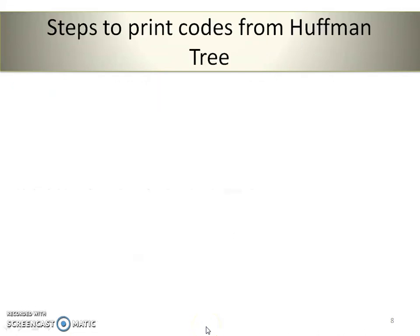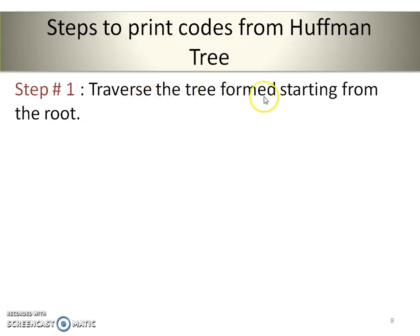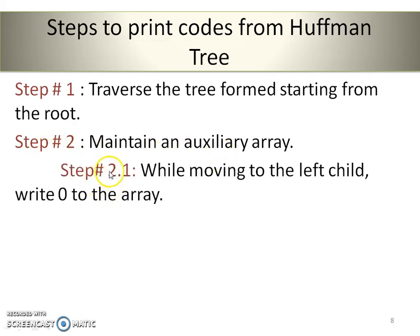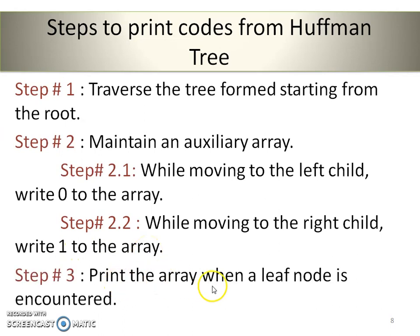After construction of the Huffman tree, we need to find out the Huffman codes. Step 1: Traverse the Huffman tree starting from the root node. Step 2: Maintain an auxiliary array. While moving to the left child write 0 to the array, and while moving to the right side write 1 to the array. Print the array when a leaf node is encountered.